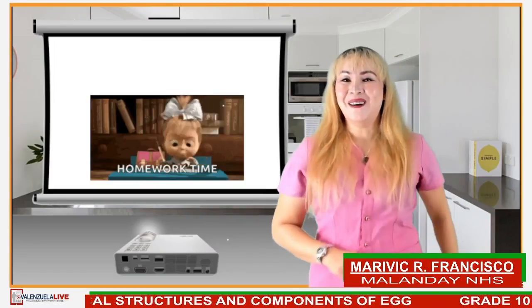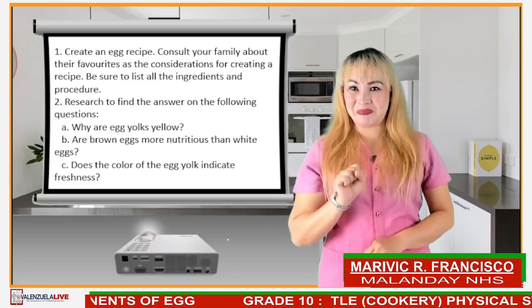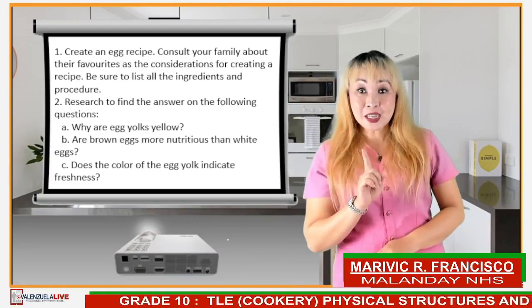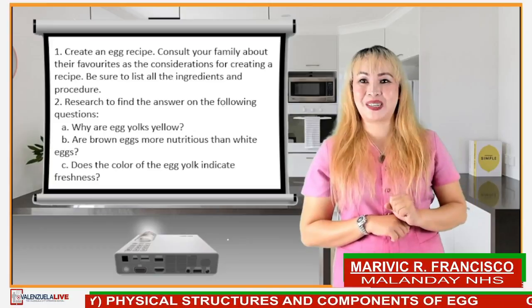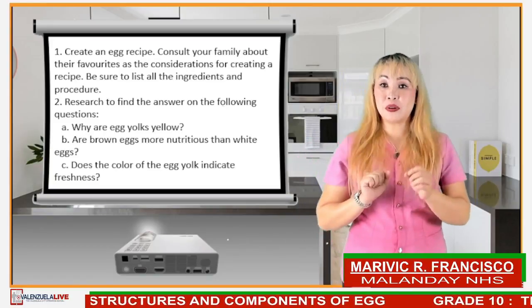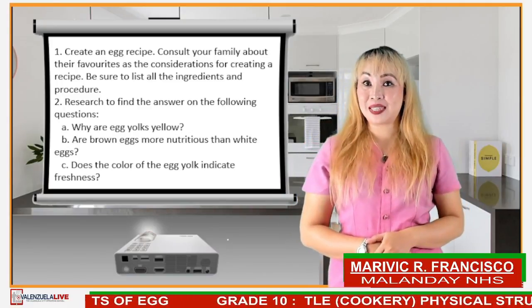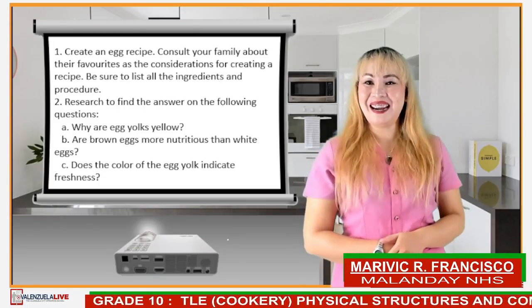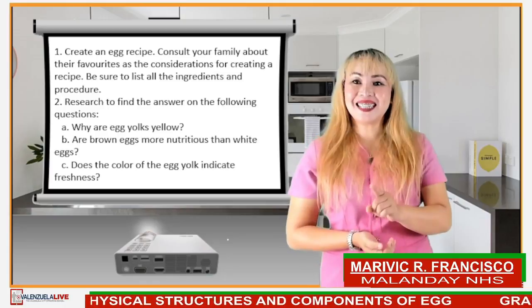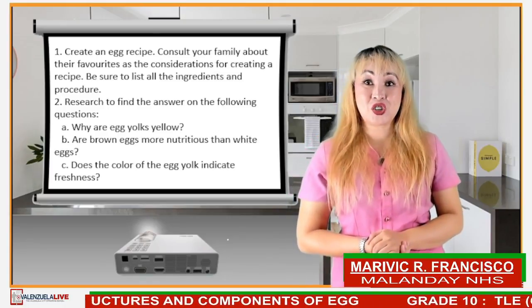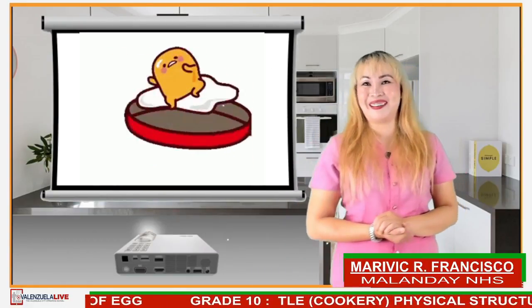Now it's homework time. Create an egg recipe. Consult your family about their favorites as a consideration for creating a recipe. Be sure to list all the ingredients and the procedures. Next, research to find the answer to the following questions: Letter A — why are egg yolks yellow? Are brown eggs more nutritious than white eggs? Does the color of the egg yolk indicate freshness? And that will be your homework.